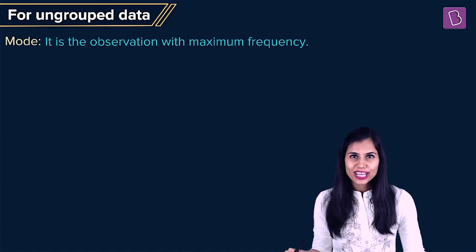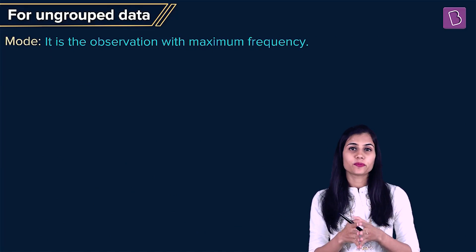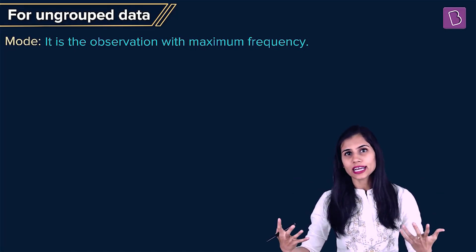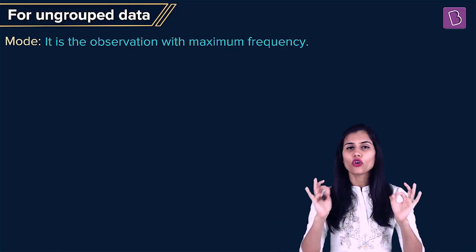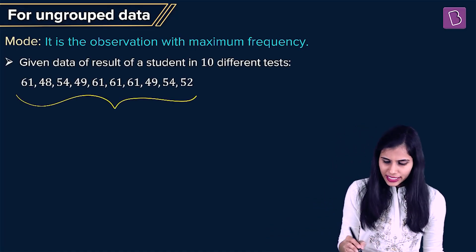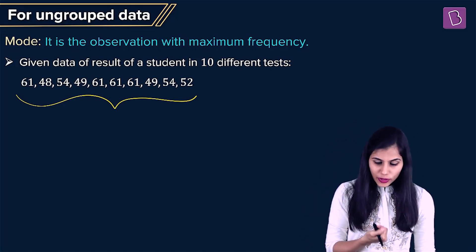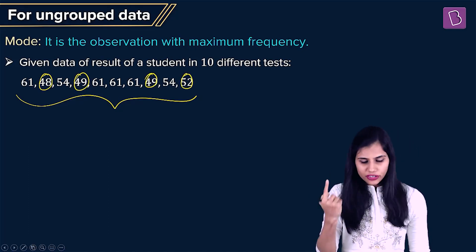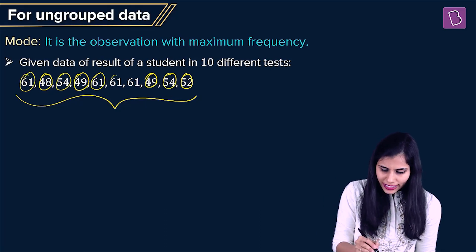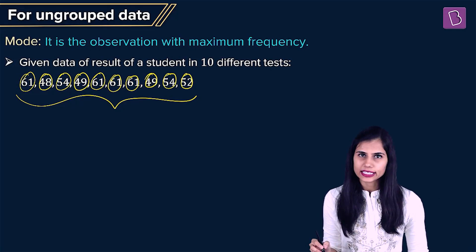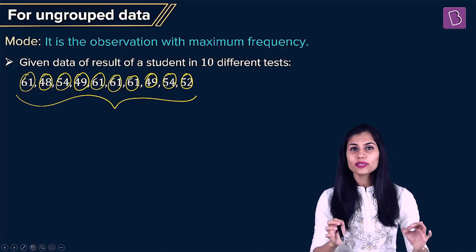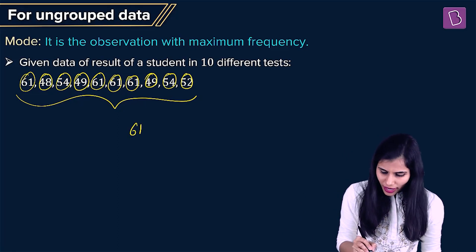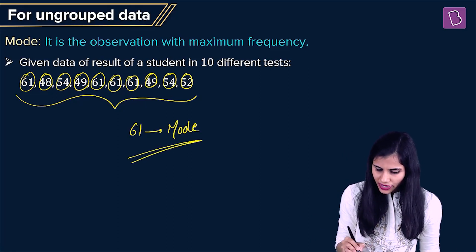Lastly, let's talk about mode. Whenever the data set is expressed as a mere list of observations, that very observation which occurs the maximum number of times in the list is declared to be the mode. For this same data set: 48 occurs once, 49 occurs twice, 52 occurs once, 54 occurs twice, and 61 occurs four times. So 61 occurs the maximum number of times — the frequency of 61 is maximum — and hence 61 is declared to be the mode of this data set.